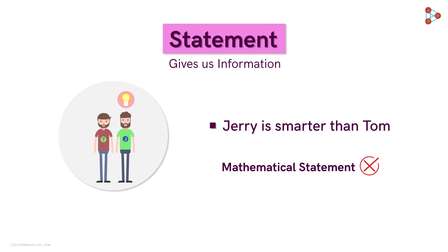That is because for some people, Jerry may be smarter than Tom. But for others, that may not be the case. So this is an ambiguous statement. It is neither true nor false. Such statements are not acceptable in mathematics. Hence, this is not a mathematical statement.